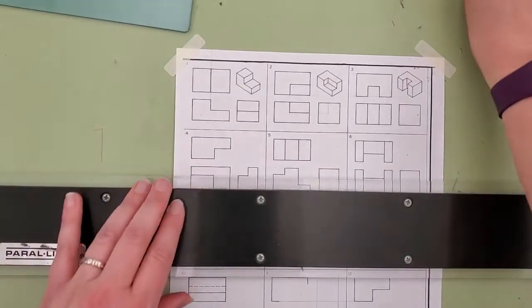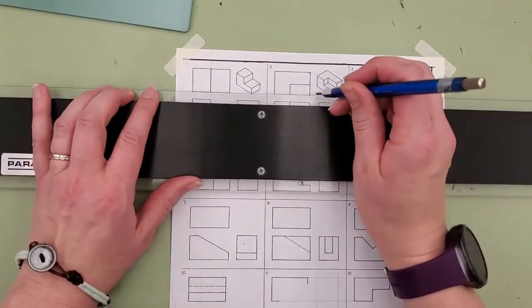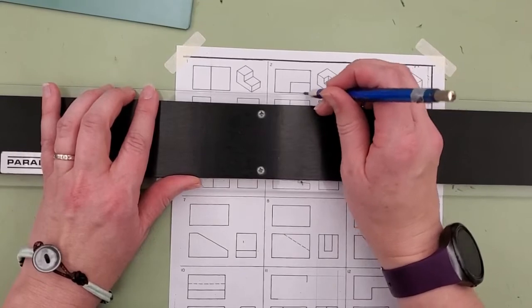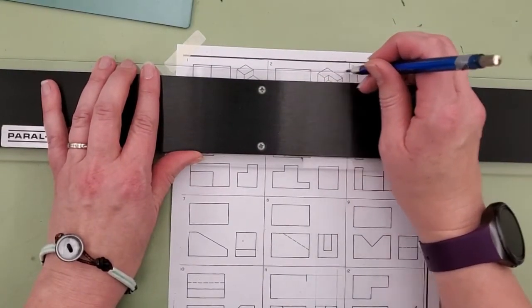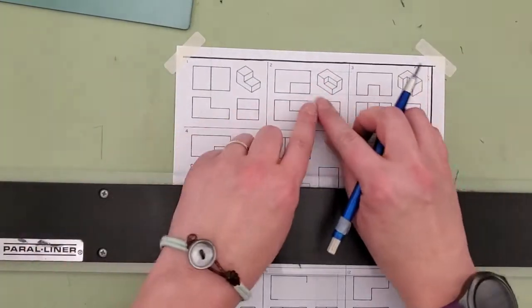So what we're going to do instead is a different trick. We're going to use construction weight lines and we're going to transfer the edge like the top and the bottom most lines from the top view over.